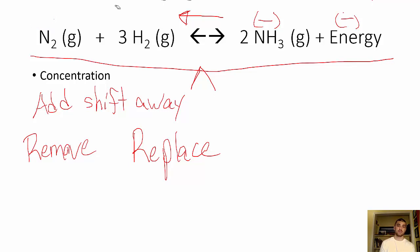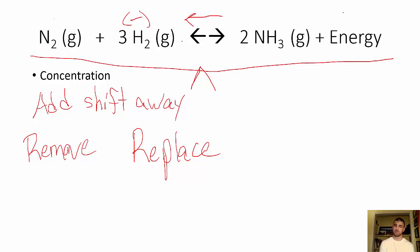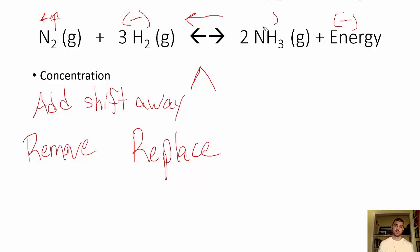Let's see what happens when I mess with H2 in the same way. Let's say I were to remove H2. Again, if I remove stuff, I've got to replace it. So I'm shifting towards that removal to replace the stuff I got rid of, which means I'm going to make more N2. How can I make more N2? Well, you've got to use up some NH3. So if we shift to the left, we use up the stuff on the right side and it goes down. I'm also going to lose energy.